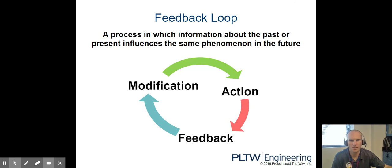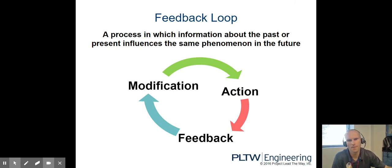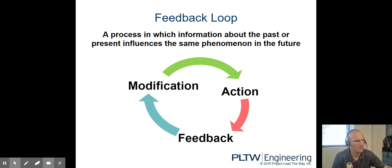And here's the feedback loop. This process in diagram form shows where we continually perform that action, receive feedback, and make modifications over and over again until we perfect our design.